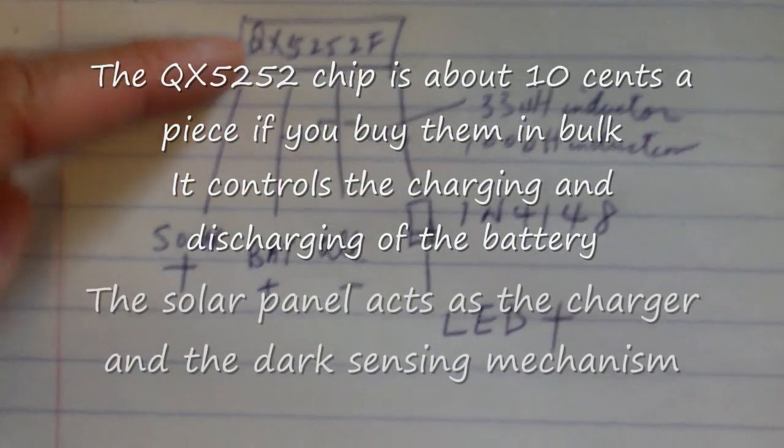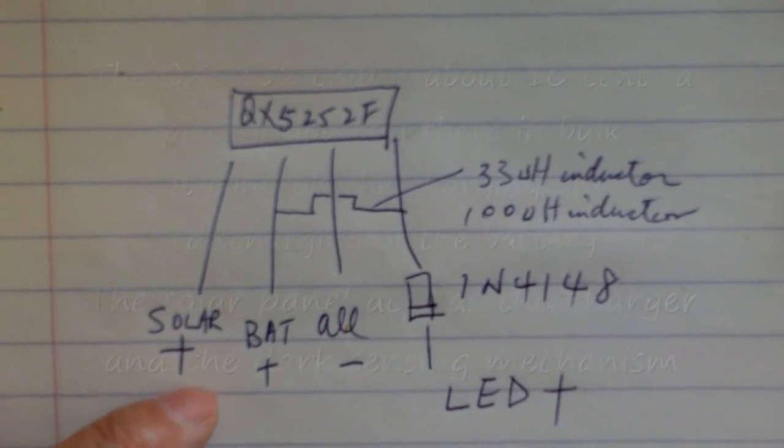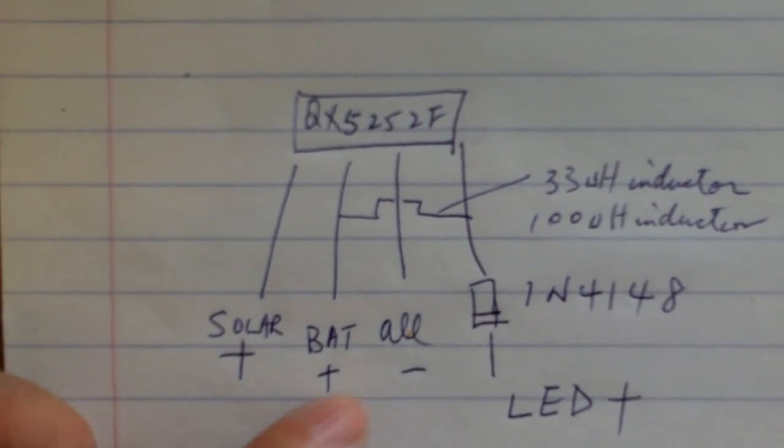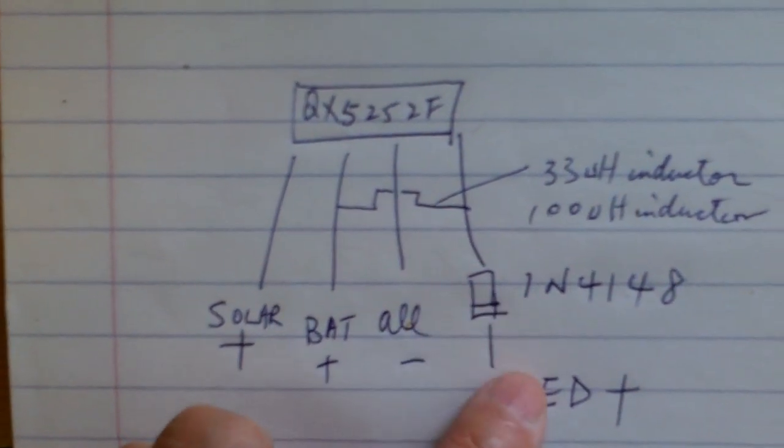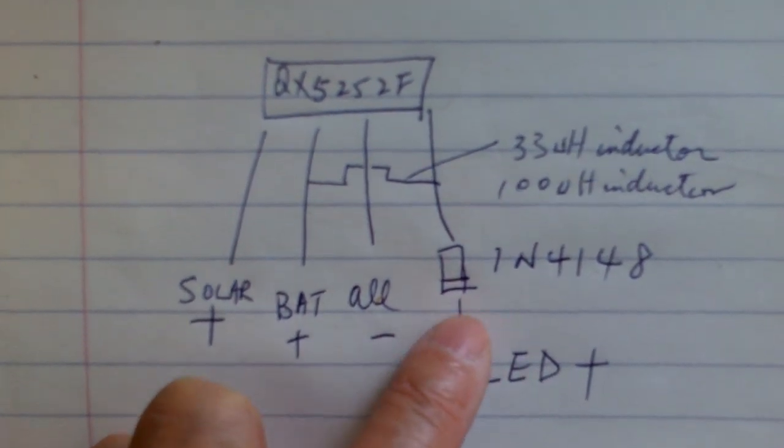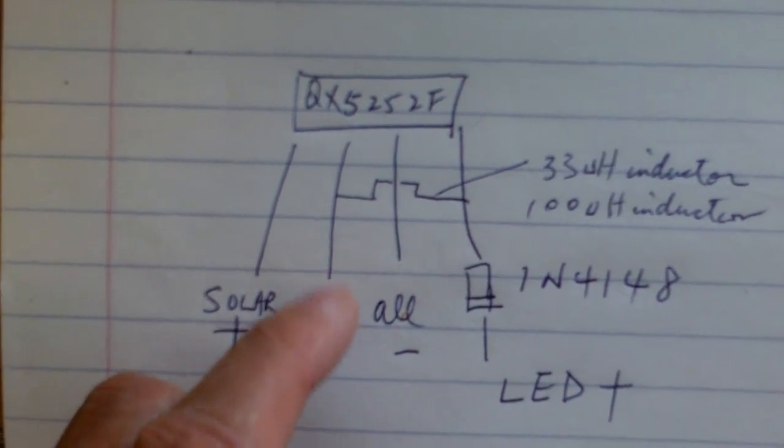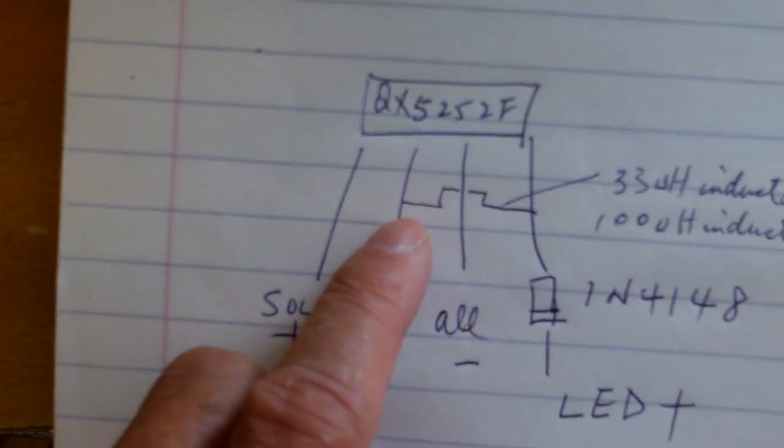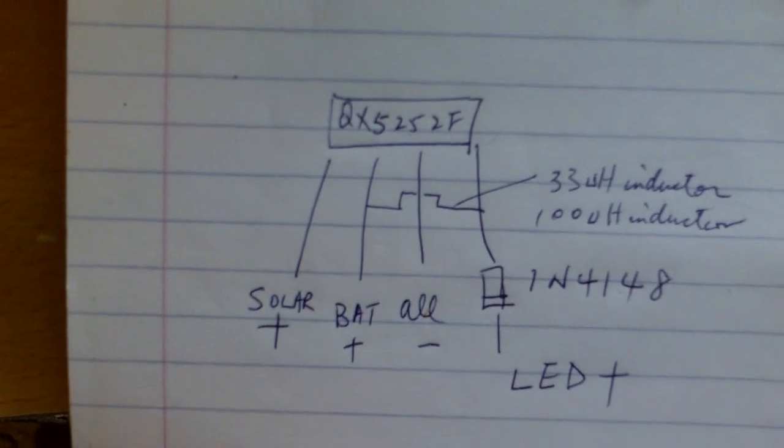This is the QX5252 chip and it has 4 pins. Pin 1 is solar plus, pin 2 is battery plus, pin 3 is all negative and pin 4 connects to your LED through a diode and the inductor is connected to pin 2 and pin 4 and that's it.